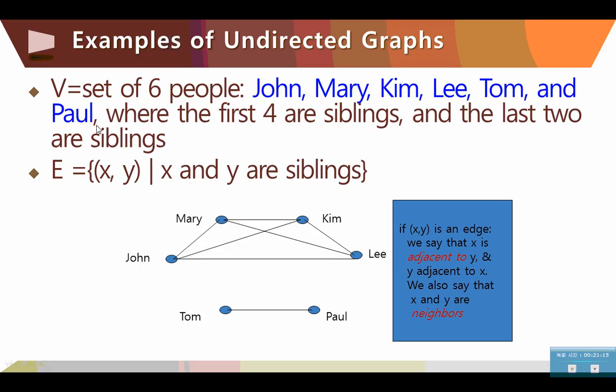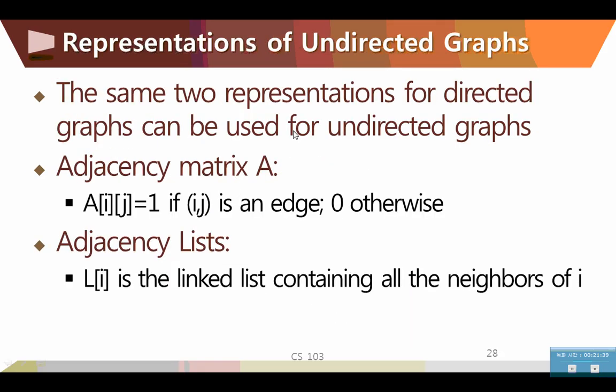If the relationship represented by the edges are symmetric, then we don't show the directions of the edges. And the graph is called the undirected graph. Including Lee, Tom, and Jack Hall, where the first four are siblings, and the last two are siblings, like this, four and two. If XY is an edge, we say that X is adjacent to Y, and Y is adjacent to X. We also say that X and Y are neighbors, so they are neighbors. From here, the same two representations for directed graphs can be used for undirected graphs.